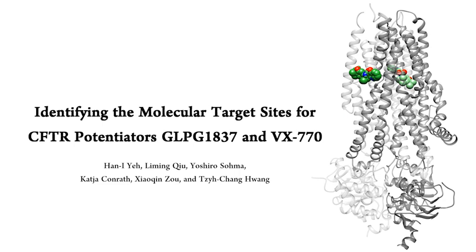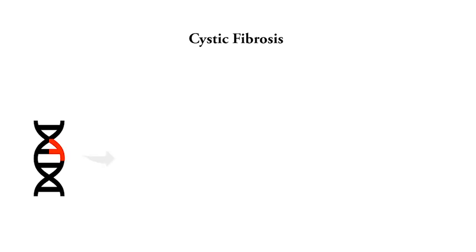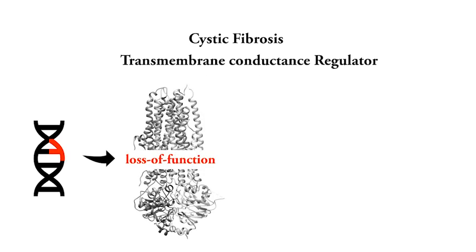This is the video summary for our paper 'Identifying the Molecular Target Sites for CFTR Potentiators GLPG1837 and VX470.' Cystic fibrosis, or CF, is a genetic disease caused by loss-of-function mutations in the chloride channel, cystic fibrosis transmembrane conductance regulator, or CFTR.